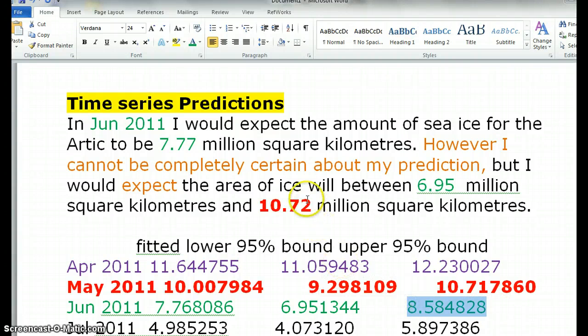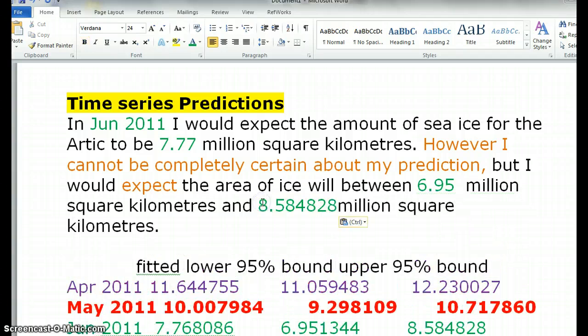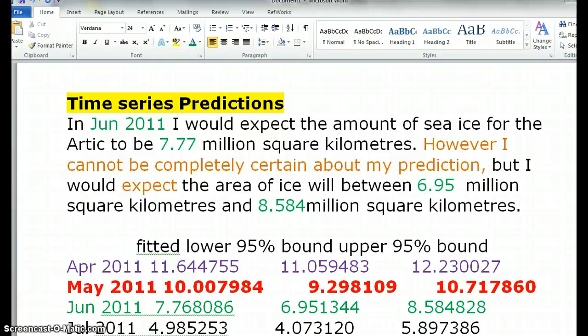And this value here—the from and the to value, if you like. And again, I check myself that 6.95 and 8.58, the 7.77 is between the two. So that all makes sense.